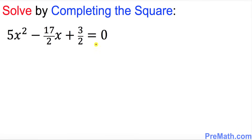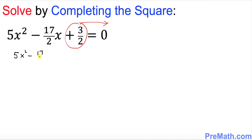The very first thing we must do is have only x variables on the left hand side. So this positive 3 over 2 must go on the other side. That means we get 5x squared minus 17 over 2x, and when you move this positive 3 over 2 to the other side it becomes negative 3 over 2.